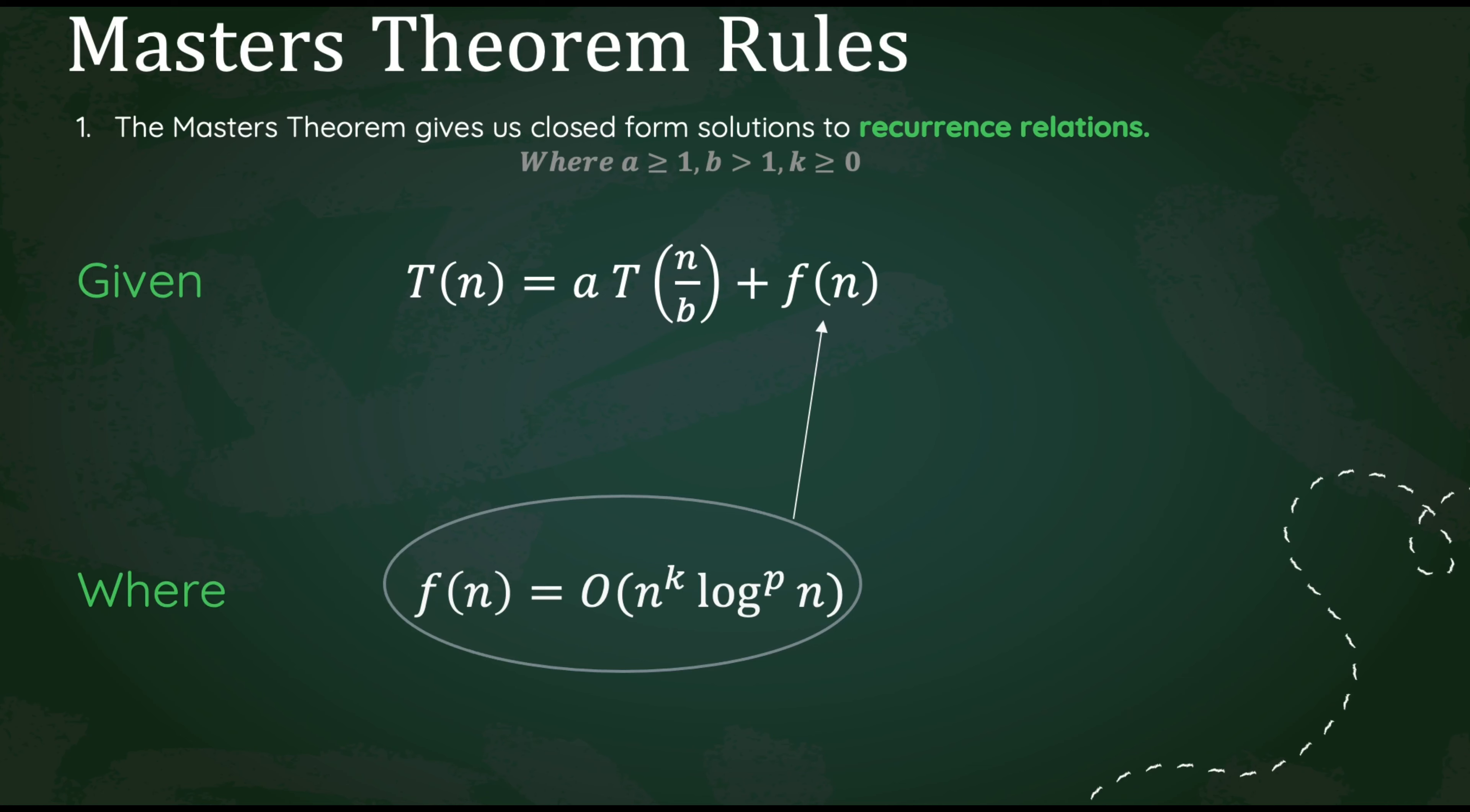Master's Theorem gives us a closed-form solution to recurrence relations. It's important to note this only occurs when a is greater than or equal to 1, b is greater than 1, and k is greater than or equal to 0.